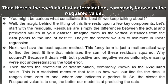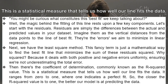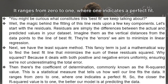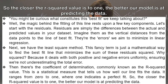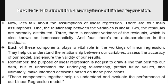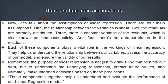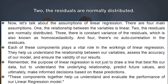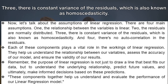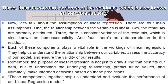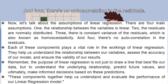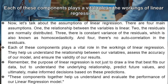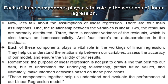Then there's the coefficient of determination, commonly known as the R-squared value — a statistical measure of how well our line fits the data. It ranges from 0 to 1, where 1 indicates a perfect fit. The closer the R-squared value is to 1, the better our model is at predicting. There are also four main assumptions of linear regression: (1) the relationship between variables is linear, (2) residuals are normally distributed, (3) there is constant variance of the residuals (homoscedasticity), and (4) there is no autocorrelation in the residuals.